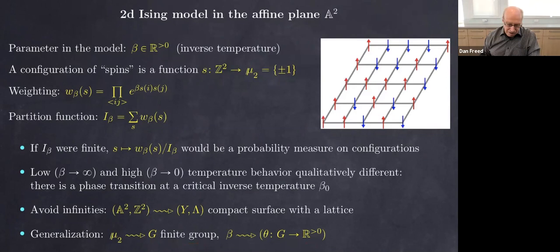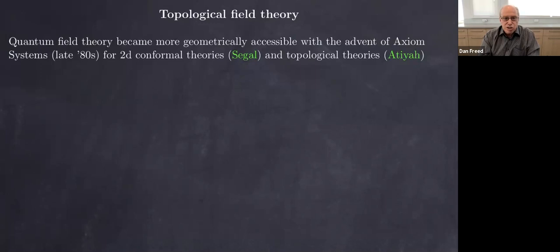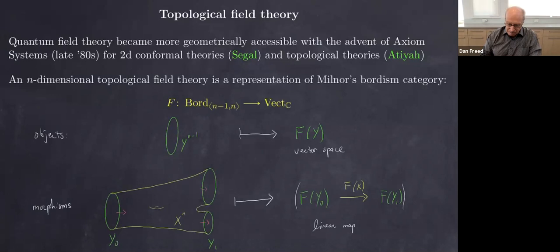That's the first character in the story. The second character — the one we're working towards — is a topological field theory. This grew out of quantum field theory. The axioms we use came in the late 1980s, first for two-dimensional conformal field theory and then for topological theories, and this was really a sea change for mathematicians being able to access ideas in physics.